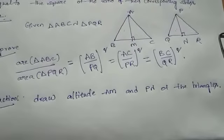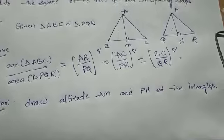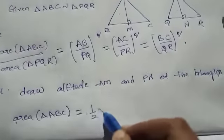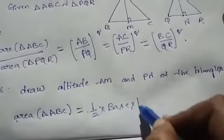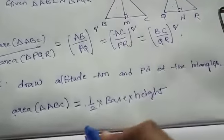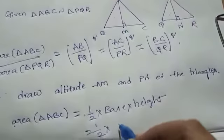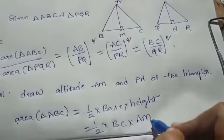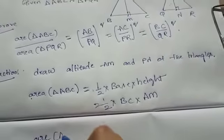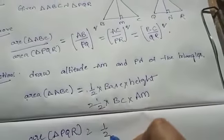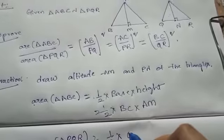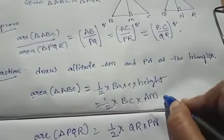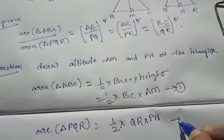What is the area of a triangle? Area of a triangle equals half into base into height. So, area of triangle ABC equals half into base BC into height AM. In the same way, area of triangle PQR equals half into base QR into height PN. This is equation 1 and this is equation 2.